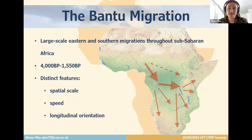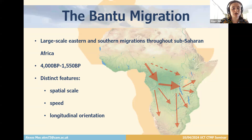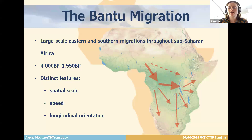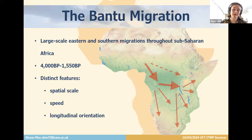The Bantu migrations were large-scale eastern and southern migrations throughout sub-Saharan Africa from about 4,000 to 1,500 years before present. There is convincing genetic, linguistic, and archaeological evidence of an origin around northwest Cameroon, called the grasslands region, and then the migration spread throughout sub-Saharan Africa into southern Africa. This is arguably one of the most successful migrations in human history due to its spatial scale, speed, and longitudinal orientation. Over a few thousand years, Bantu-speaking people proliferated over 9 million square kilometers; there are currently around 600 Bantu languages spoken by 350 million people.